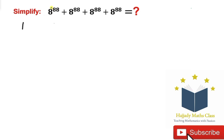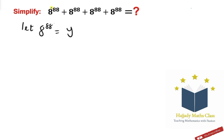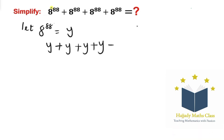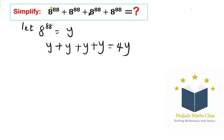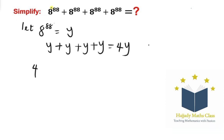The first thing we have to do is let a to the power of 88 be equal to y. With this substitution, we can have y plus y plus y plus y, which gives us 4y.